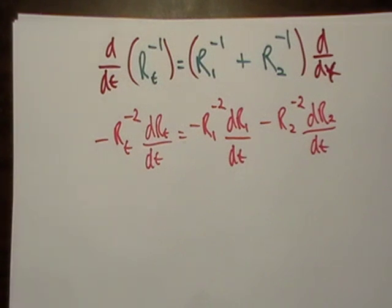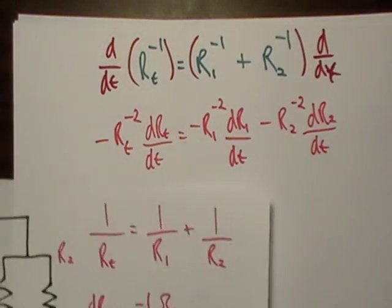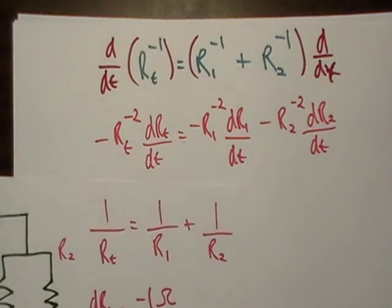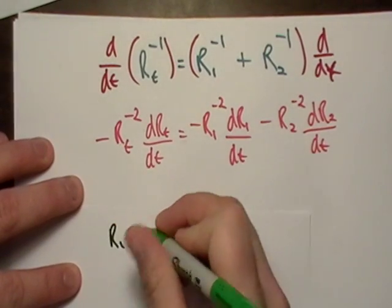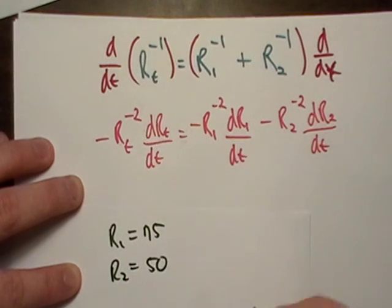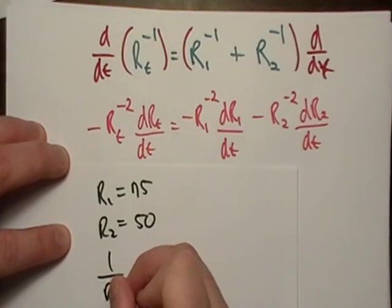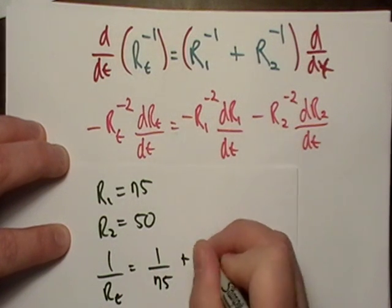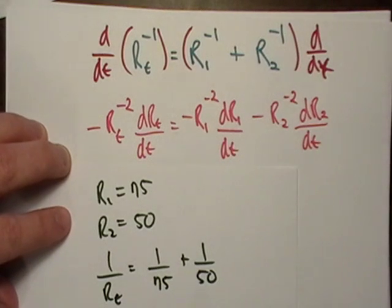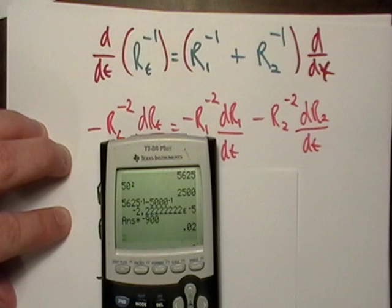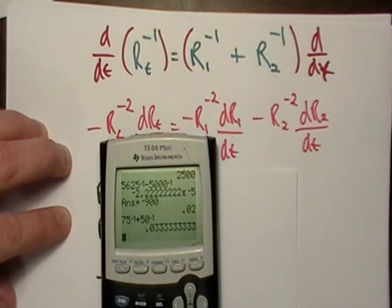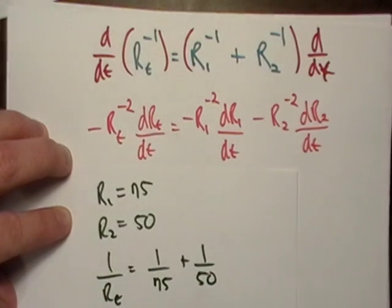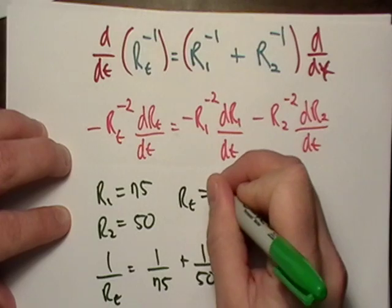Actually, before we do that, let's just go ahead and find out what RT is. We're going to go back to this formula right here. I think I'm going to use a separate piece of paper to do this section of it. R1 was equal to 75, R2 is equal to 50. That tells us that 1 over RT is equal to 1 over 75 plus 1 over 50. I'm just going to punch this into my calculator, because it's much easier to do that. I'll go 75 to the negative 1 plus 50 to the negative 1. I'm going to get my answer, then I'm going to do the reciprocal of that, and it gives me 30 ohms. So, RT is equal to 30.